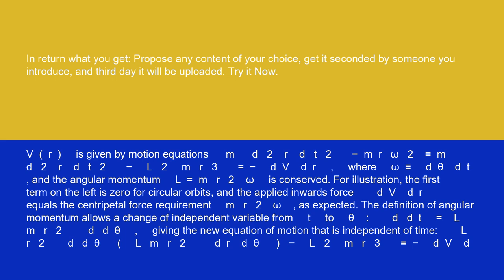For illustration, the first term on the left is zero for circular orbits, and the applied inwards force dV/dr equals the centripetal force requirement m r² ω, as expected. The definition of angular momentum allows a change of independent variable from t to θ: d/dt equals (L/m r²) d/dθ, giving the new equation of motion that is independent of time: (L/r²) d/dθ [(L/m r²) dr/dθ] minus L²/(m r³) equals minus dV/dr.